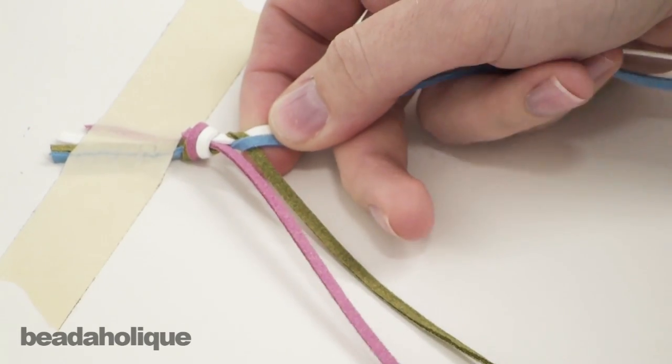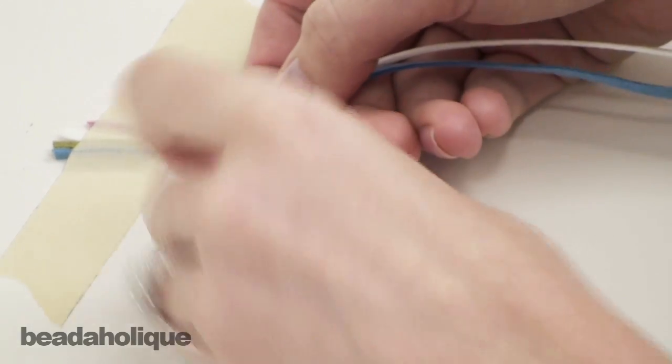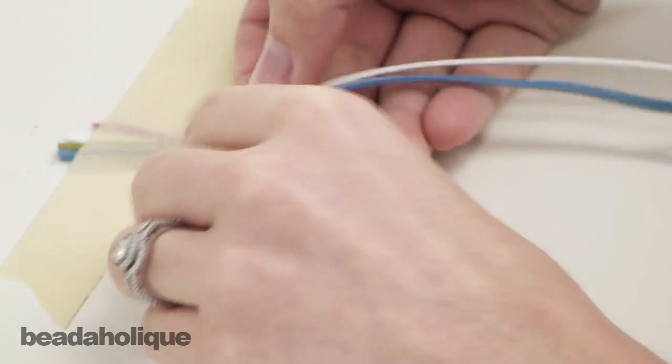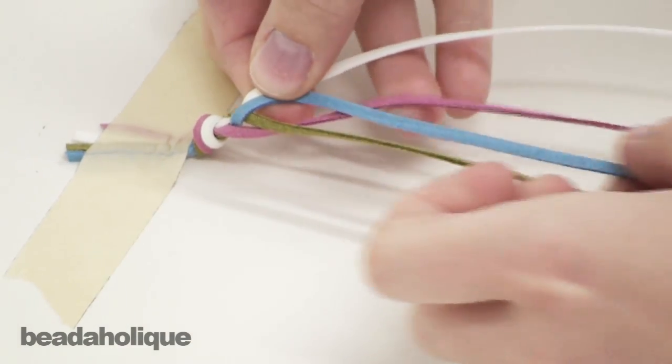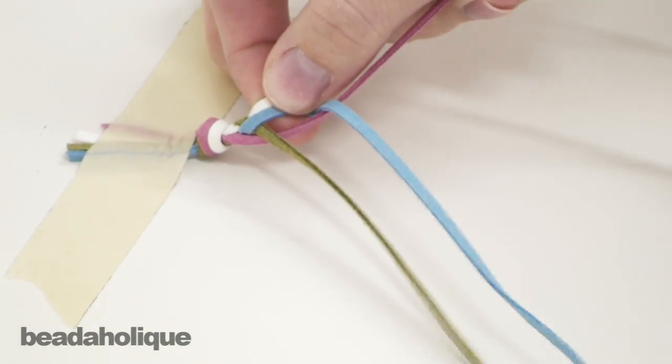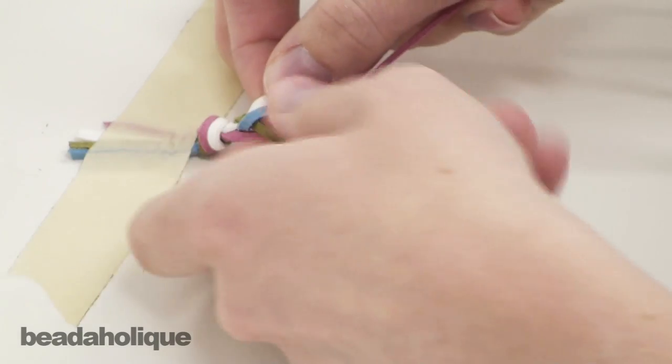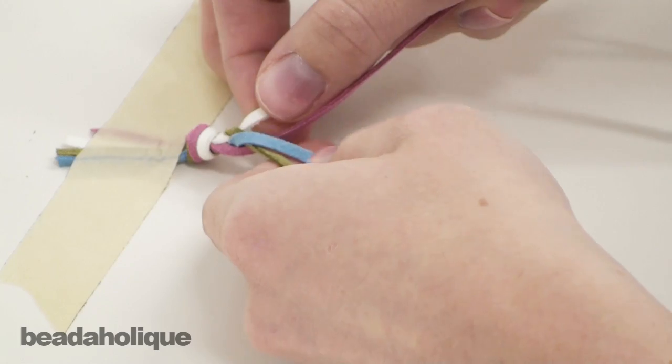And those are the only two steps. So you're just going to repeat. You're going to take the leftmost strand and bring it over one shy of the end. And like I said, wrap it around so that you're going to get a nice shape on that.